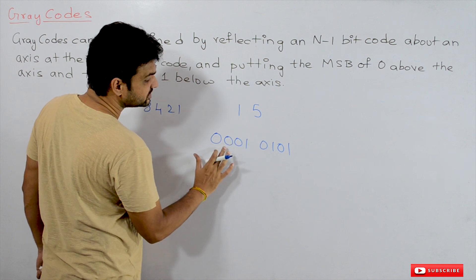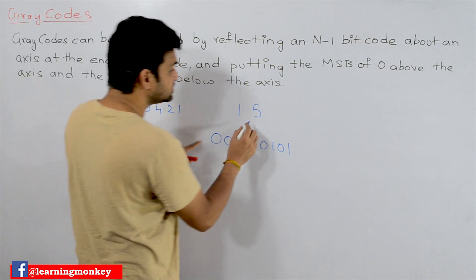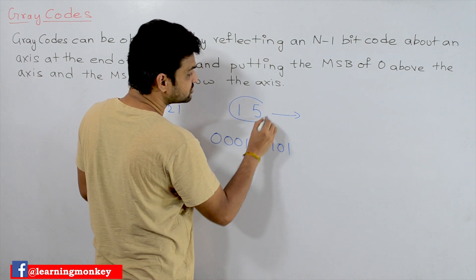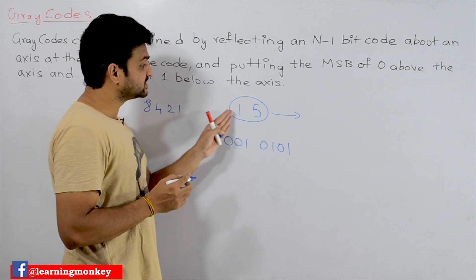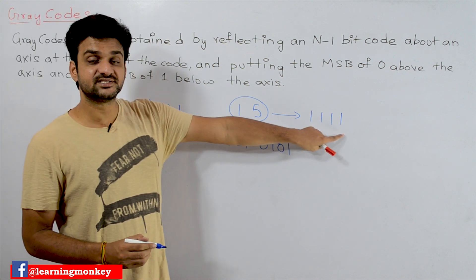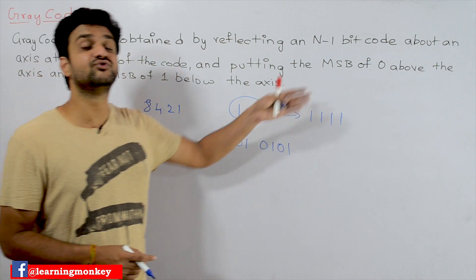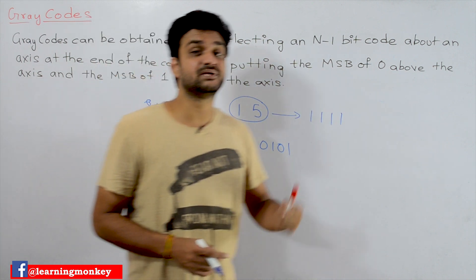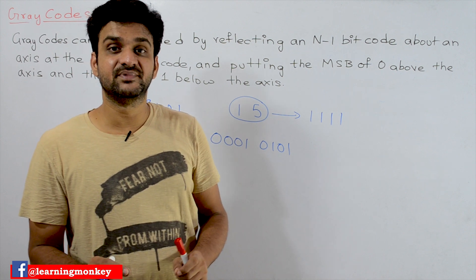Now, how does 15 get represented in gray code? Every decimal number has a unique code in gray, similar to binary number representation. The binary representation of 15 is four ones — 1111. In the same way, gray code will also have a unique representation for 15. That is the way in which decimal numbers are represented in gray code.